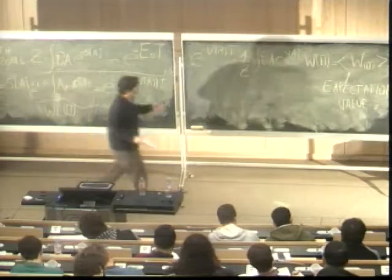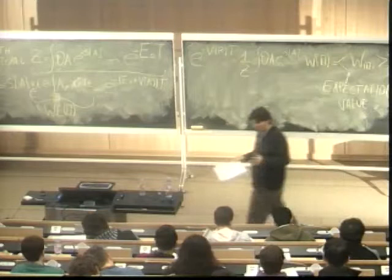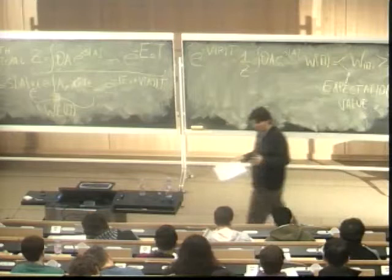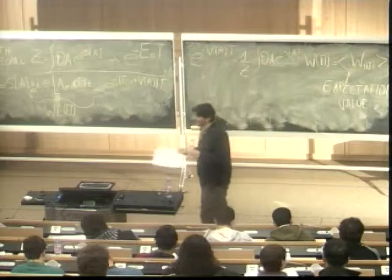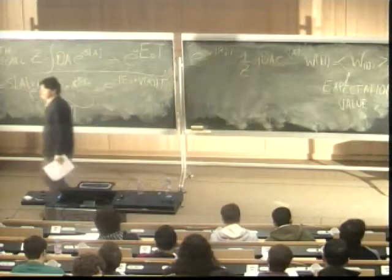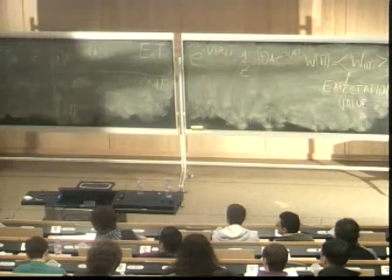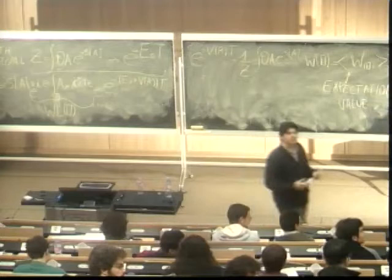What we have proven is that the static potential between two charges is given by the expectation value of the rectangular Wilson loop. So when you hear someone say that, now you know exactly why this is the case.